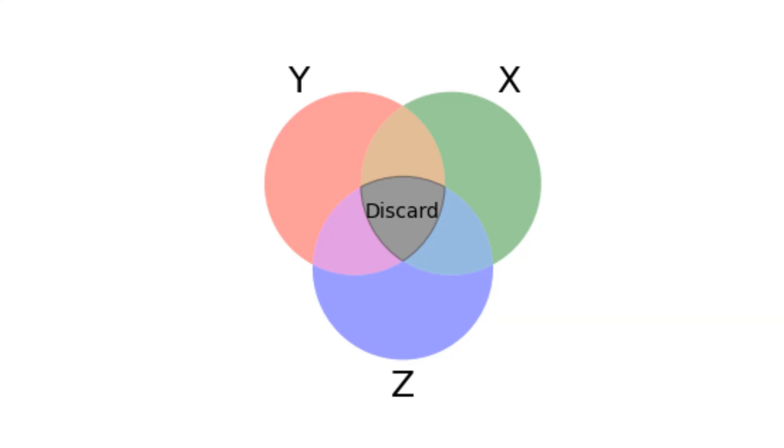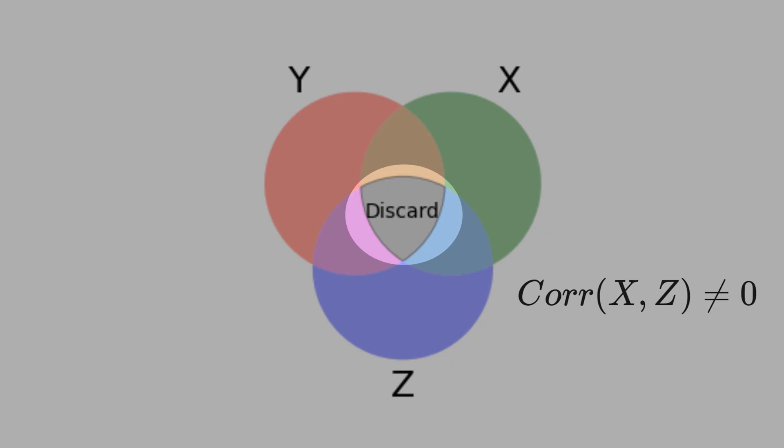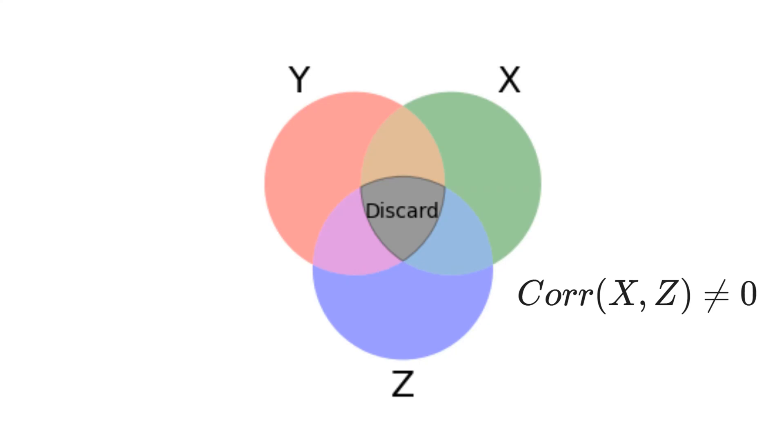This diagram also explains the multicollinearity problem. If X and Z are highly correlated, this black area increases and more information is discarded. Then both coefficients of X and Z will not be statistically significant.